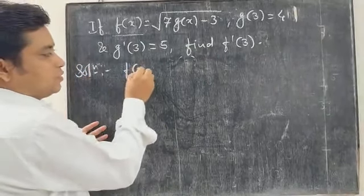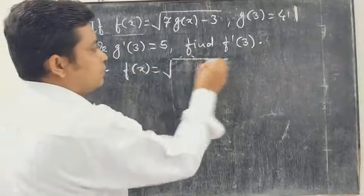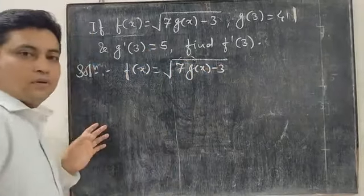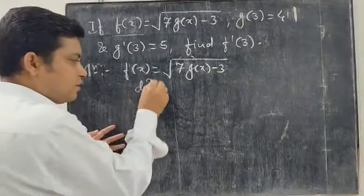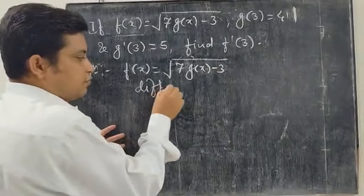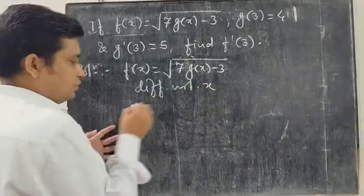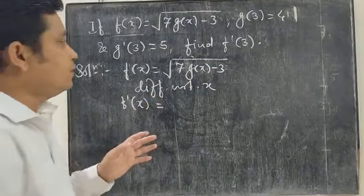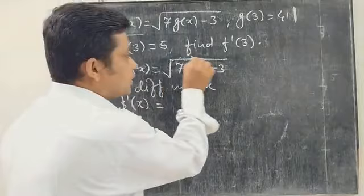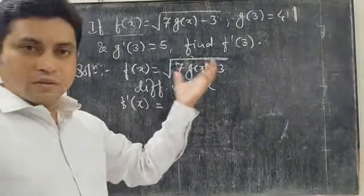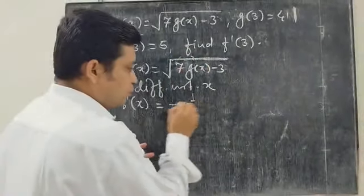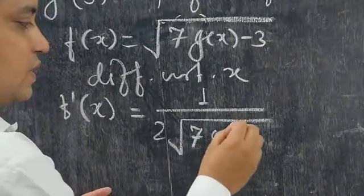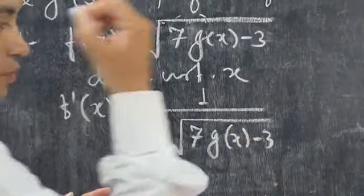Solution: f of x is equal to the square root of 7g(x) minus 3. Now differentiating with respect to x, we get on the left hand side f dash of x, and on the right hand side 1 upon 2 under root of 7g(x) minus 3.